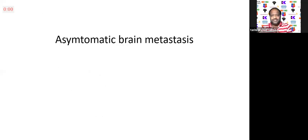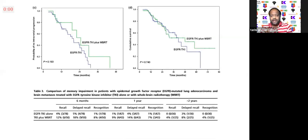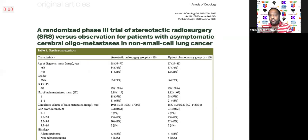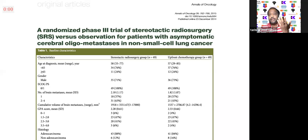For asymptomatic patients, data is very limited. Whatever data we have shows that EGFR or ALK inhibitor plus radiotherapy versus RT alone, or EGFR inhibitor plus radiotherapy versus EGFR TKI alone — there is no difference in survival.